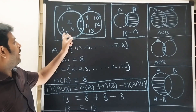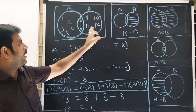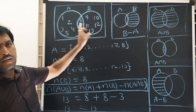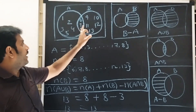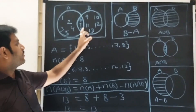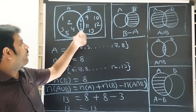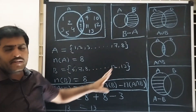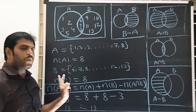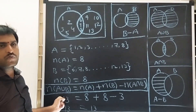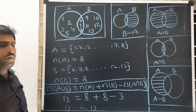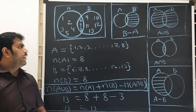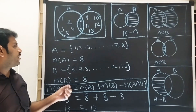Set A union B, N of A union B, set A minus B, N of A minus B, set B, N of B. We have two formulas for A union B.